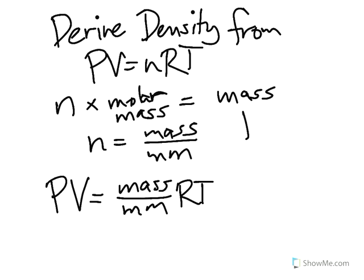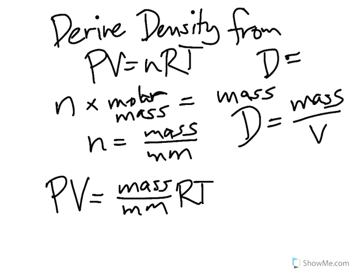Remember that the density equation is just mass divided by the volume. If you've ever forgotten this, just think about the heart. Density is equal to a heart with a line going through it, and it looks like an M on top and a V at the bottom.